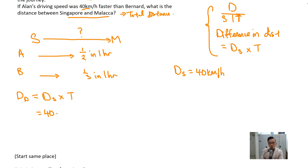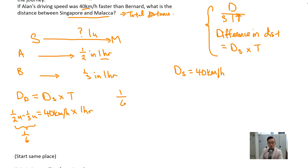This equals 40 kilometers per hour times the time traveled, which is one hour. The difference in distance is half u minus one third u — using the total distance as one u. So half u minus one third u equals one sixth u. And 40 times one hour equals 40 kilometers. So one sixth u equals 40 kilometers, meaning one u equals 40 times 6, so six u equals 240 kilometers.